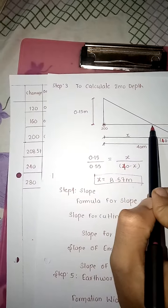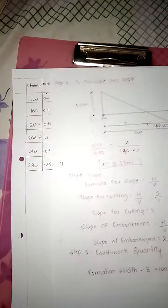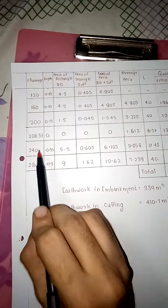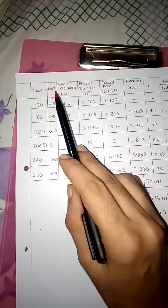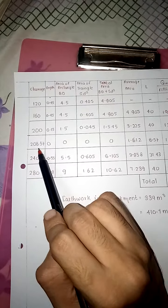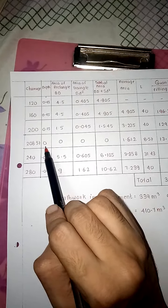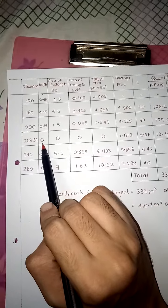x value we calculated is at 208.57. So chainages are: 120, 160, 200, 208.57, 240, 280. We took all depths. At 208.57, depth is 0 because there neither filling nor cutting is needed.